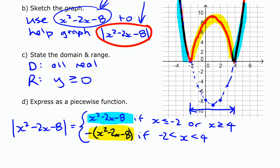As noted before, that reflected piece could also be distributed: you could write it as negative x squared plus 2x plus 8, switching all the signs. That is a look at the absolute value of a quadratic function.